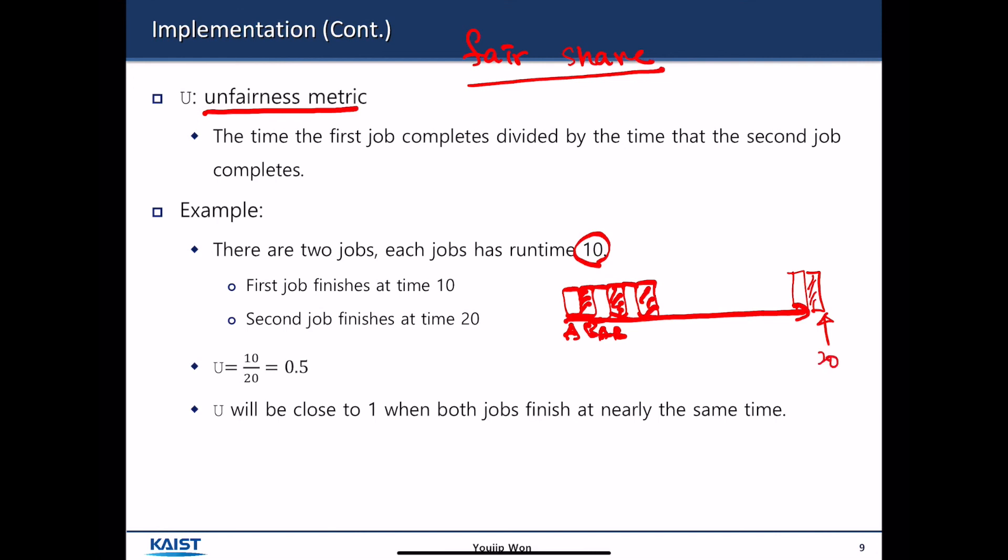But in an extreme case, A gets the CPU first and A completely monopolizes CPU when it finishes at time 10. And then second job starts to execute and it runs and then it finishes at 20. In that case, the ratio between the two corresponds to 0.5. So, if both jobs finish nearly at the same time, then the unfairness metric will correspond to nearly 1.